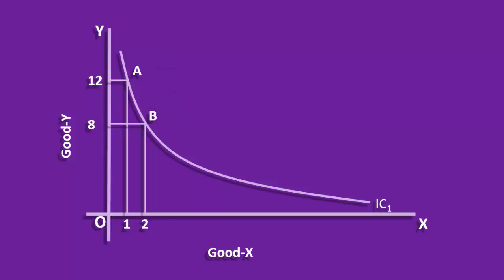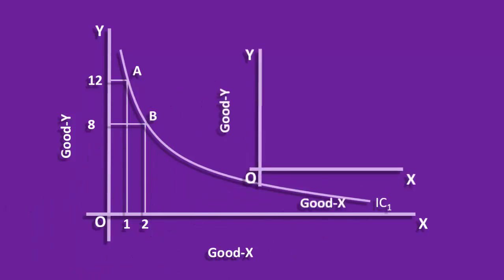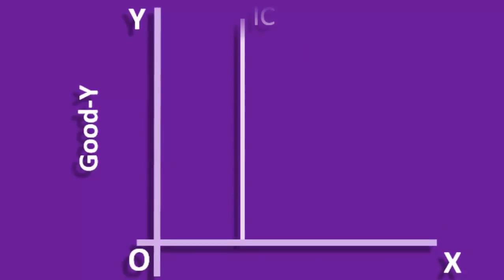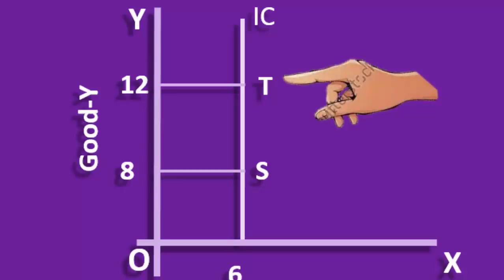Indifference Curve cannot take any other shape. Look at the top right corner. Here, the Indifference Curve is assumed to be a vertical curve. It means when the stock of good Y increases from 8 units to 12 units, the stock of good X remains unchanged at 6 units. Of the two combinations, S and T, consumer will prefer T. T will offer more utility than S. As S and T represent two different levels of satisfaction, IC cannot have a vertical shape.